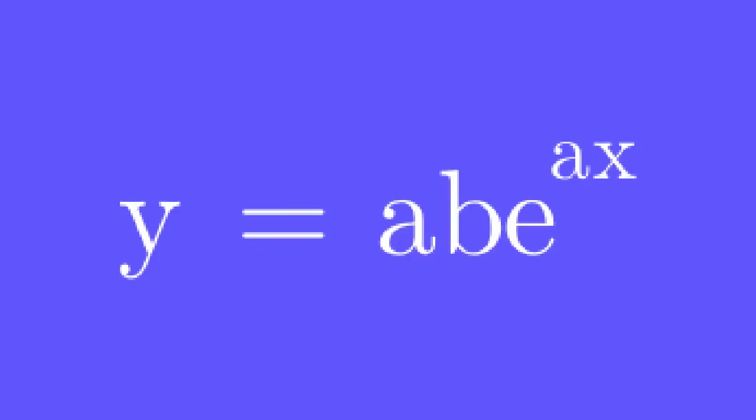Find the differential equation to which this given equation is a solution. This problem involves elimination of arbitrary constants. To eliminate the arbitrary constants, differentiate this equation up to the second derivative because there are two arbitrary constants: a and b.